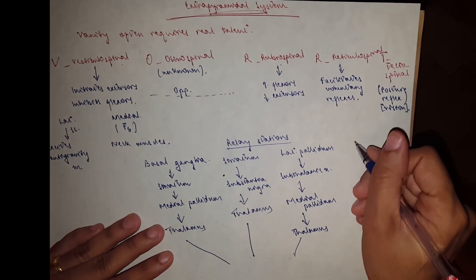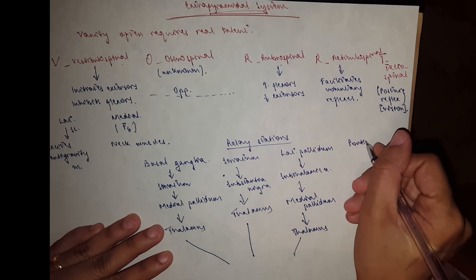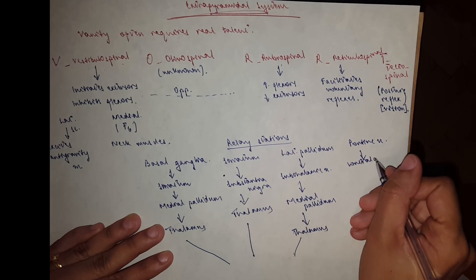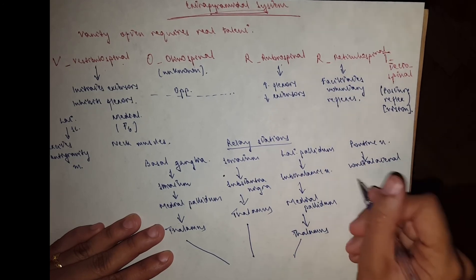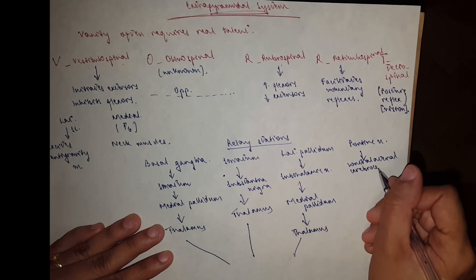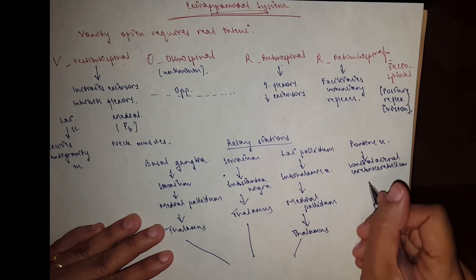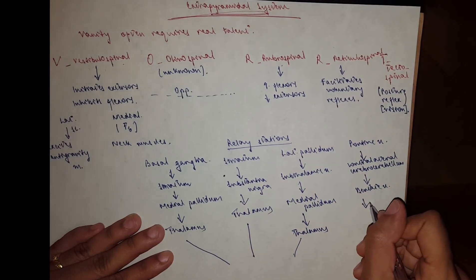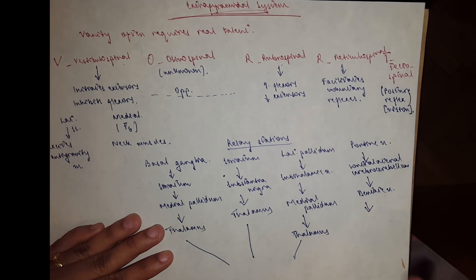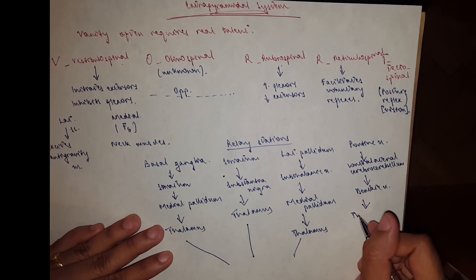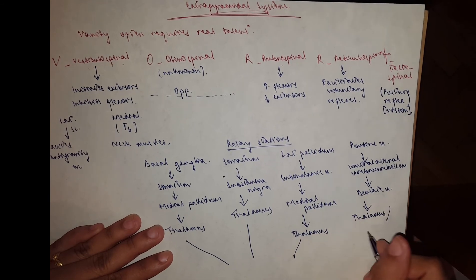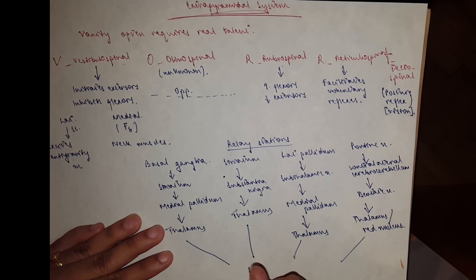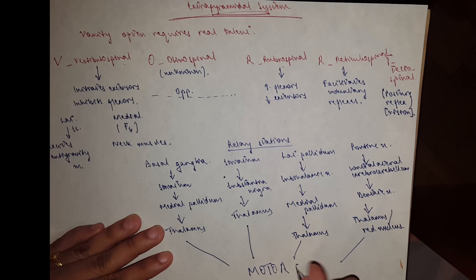The last one we have is from the cerebellum. It starts from the pontine nucleus in the pons, then the contralateral cerebrocerebellum, which goes to the dentate nucleus of the cerebellum. This can either go to the red nucleus or the thalamus ventral lateral. Finally, they all end in the motor cortex.